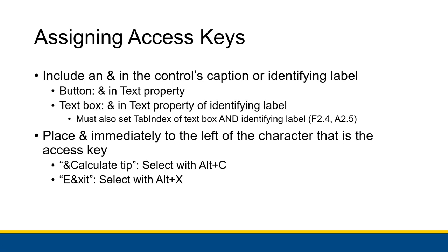You'll also have to set the tab index of the text box and the identifying label accordingly, which we'll talk more about in the next video. You place the ampersand immediately to the left of the character that is the access key. For Calculate Tip, we want ALT-C to be the access key, so we put the ampersand in front of the C. For Exit, we want X to be the access key, so we put the ampersand in front of the X — so it's E-ampersand-XIT, or ampersand-Calculate-Tip. It is directly to the left of the character that is the access key.